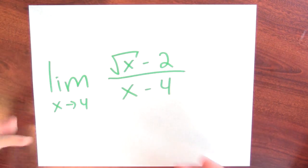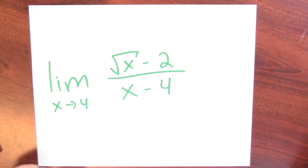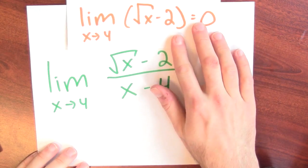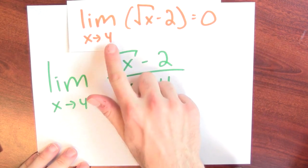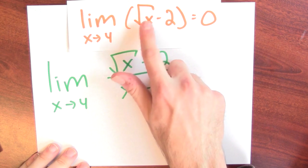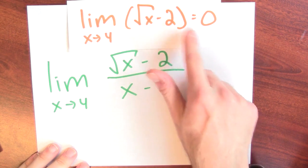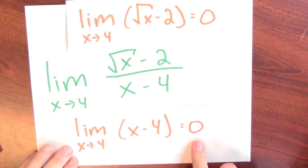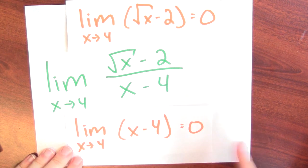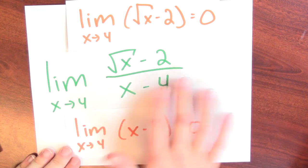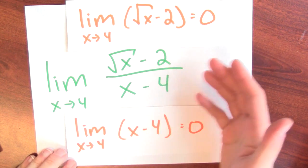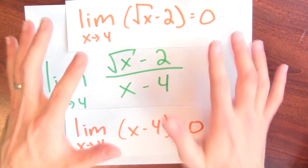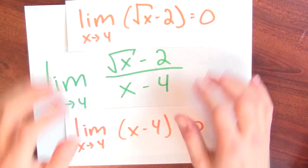We can also think about this maybe a little bit more intuitively. Look at what's going on: the limit of the numerator is 0, right? As x approaches 4, the square root of a number close to 4 minus 2 is close to 0. And the limit of the denominator is also 0. Because the limit of the denominator is 0, I can't just use the limit of the quotient as a quotient of limits to evaluate this limit. I'm genuinely in a difficult situation.